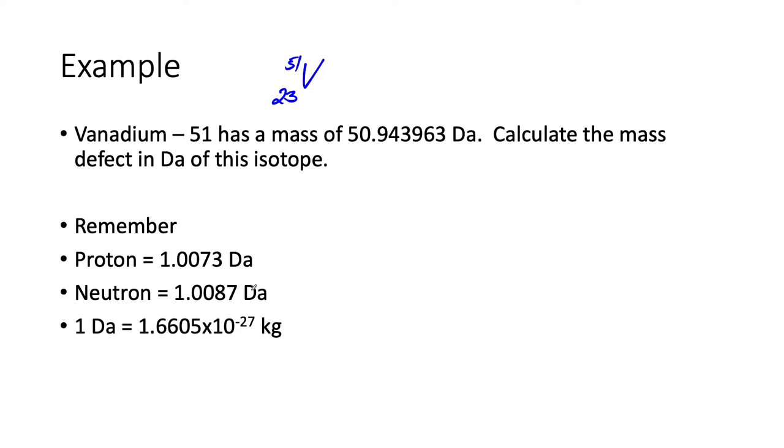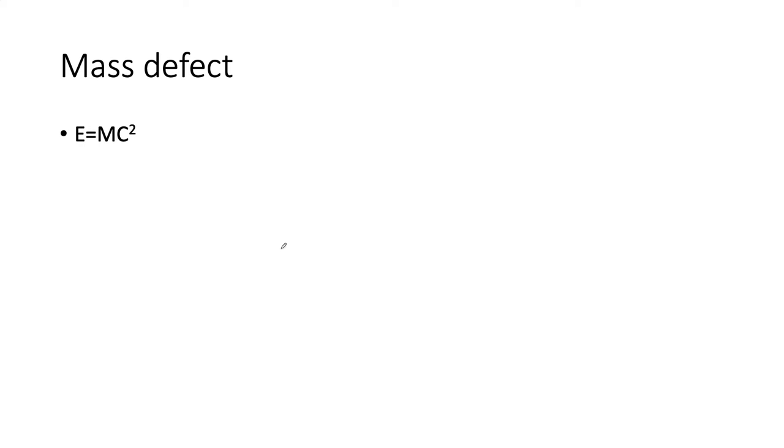Here we go. We don't need this equation—this goes to the other slide, sorry about that. So vanadium has what we say: 23 protons and 28 neutrons.